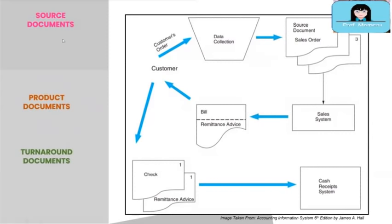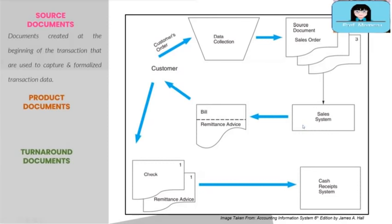Source documents are created at the beginning of the transaction and are used to capture and formalize transaction data. The diagram on the screen illustrates a simple sales order and collection process. The process starts with taking the orders of the customer, where data about customer orders are collected. The source document used to capture and formalize the customer's order data is called the sales order document.